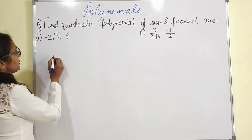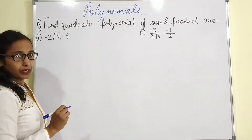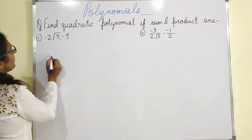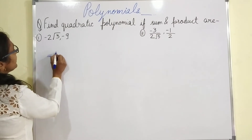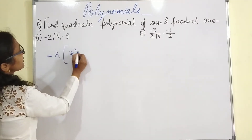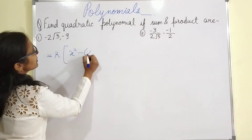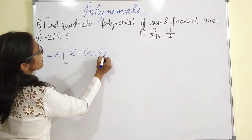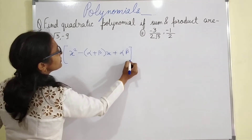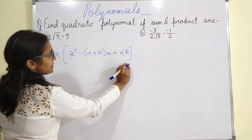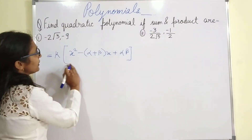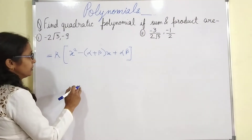If alpha and beta are zeros of the polynomial, then the quadratic equation will be x squared minus (sum of the zeros) x plus (product of the zeros). This is the format of a quadratic equation.